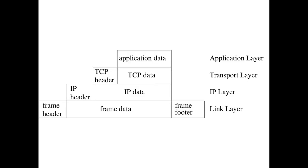What is ARP? ARP is a link layer protocol. If we recall the network stack, we have the link layer at the bottom, the IP layer above it, the transport layer above that, and the application layer.